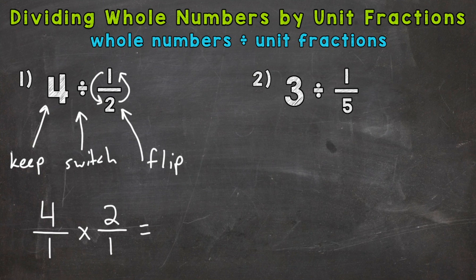Now we can multiply straight across. Four times two is eight, and one times one is one. We have an improper fraction, so we divide. How many groups of one can we pull out of eight? Well, eight. Or you can think of it as, we have a whole number over one, so it's just going to be that whole number. And our answer is eight.